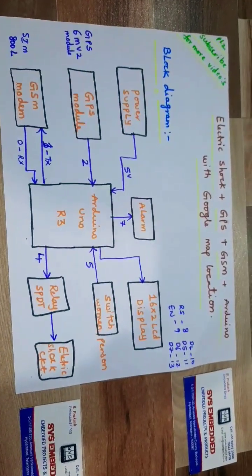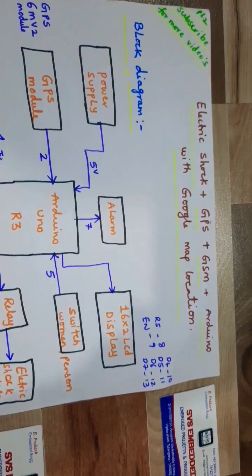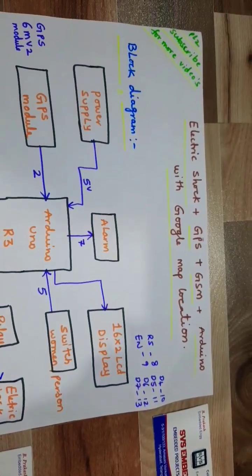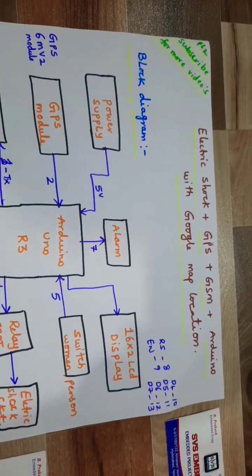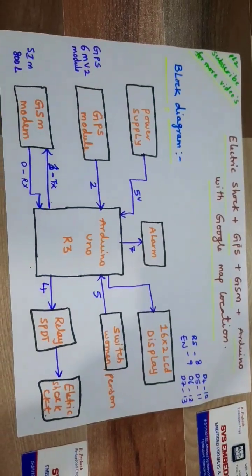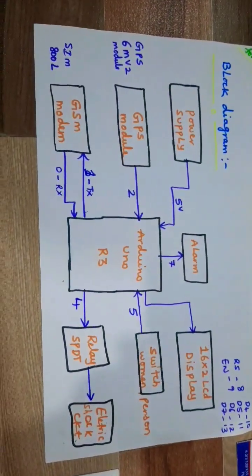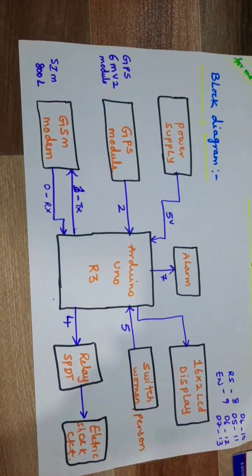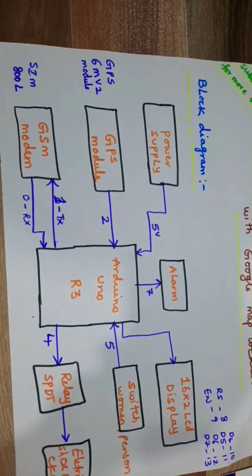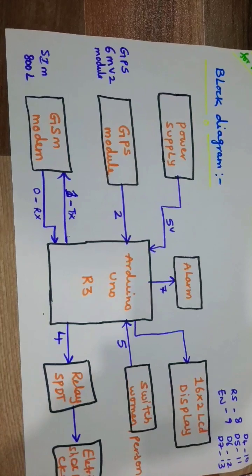Women safety security system using electronic shock, GPS, GSM, Arduino UNO R3 with Google Map location. In this project we are using an Arduino UNO R3, 5 volt power supply module, and GPS GY6M V2 GPS module.